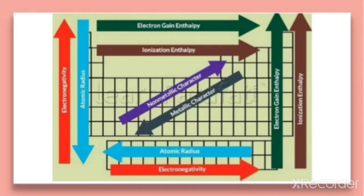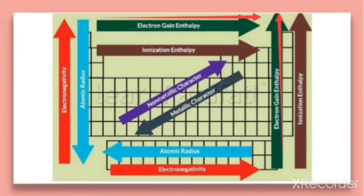From the chart it is clear that electron gain enthalpy becomes more negative from left to right in a period, since halogens have a greater tendency to accept electrons and therefore show high negative electron gain enthalpy. Top to bottom, electron gain enthalpy decreases, so bottom to top it is increasing.